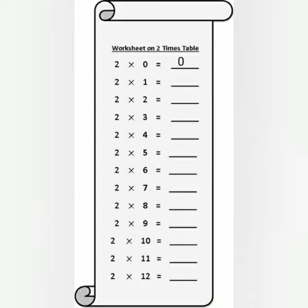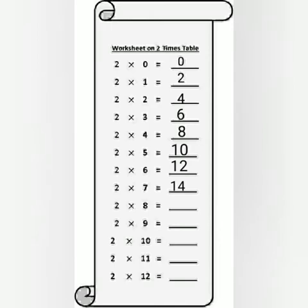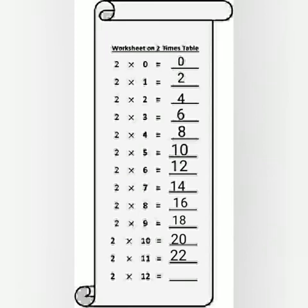Do it with me, we're going to go fast. Two times zero is zero, two times one is two, two times two is four, two times three is six, two times four is eight, two times five is ten, two times six is twelve, two times seven is fourteen, two times eight is sixteen, two times nine is eighteen, two times ten is twenty, two times eleven is twenty-two, two times twelve is twenty-four. Great work!